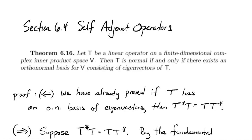We ended the previous lecture talking about normal operators. We proved that if you have an orthonormal basis of eigenvectors, then your operator is normal — meaning the composition of it and its adjoint in either order are equal. Theorem 6.16 says that condition is also sufficient for a finite dimensional complex inner product space. So that operator is normal if and only if you can find an orthonormal basis of eigenvectors. Being normal is equivalent to being diagonalizable by an orthonormal basis of eigenvectors.